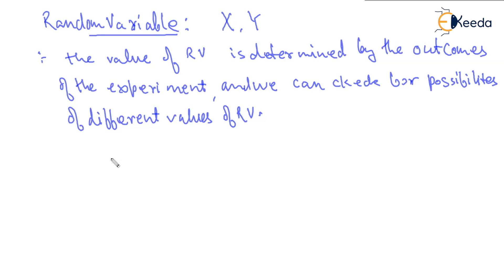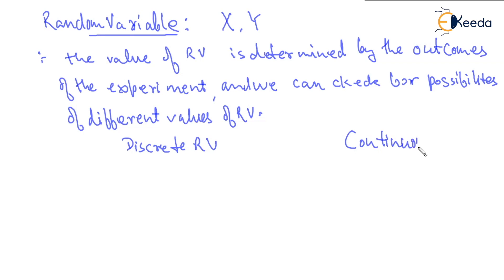This random variable can be a discrete random variable and it can also be a continuous random variable. Discrete means it takes values like one, two, three, or it can be continuous — taking all possible values between one and two and three and so on.